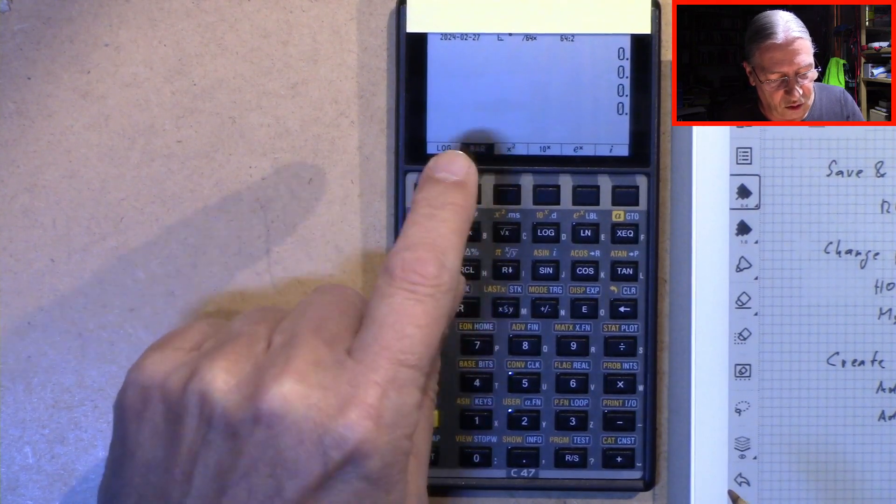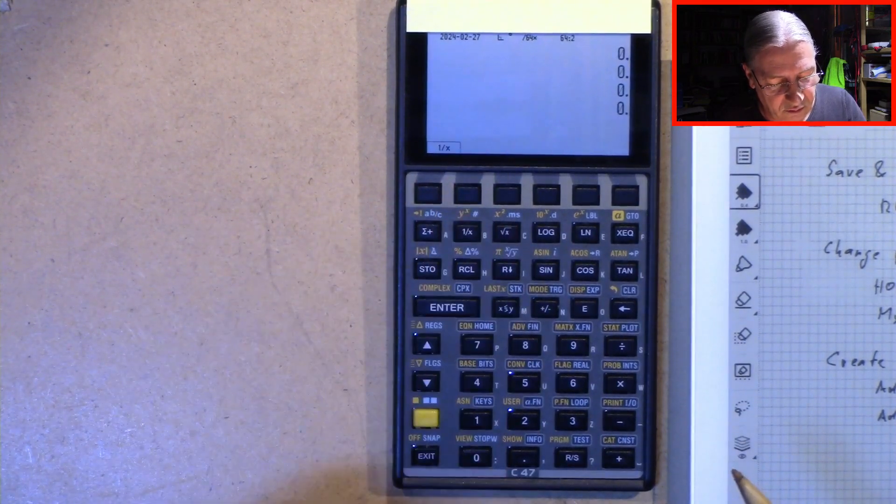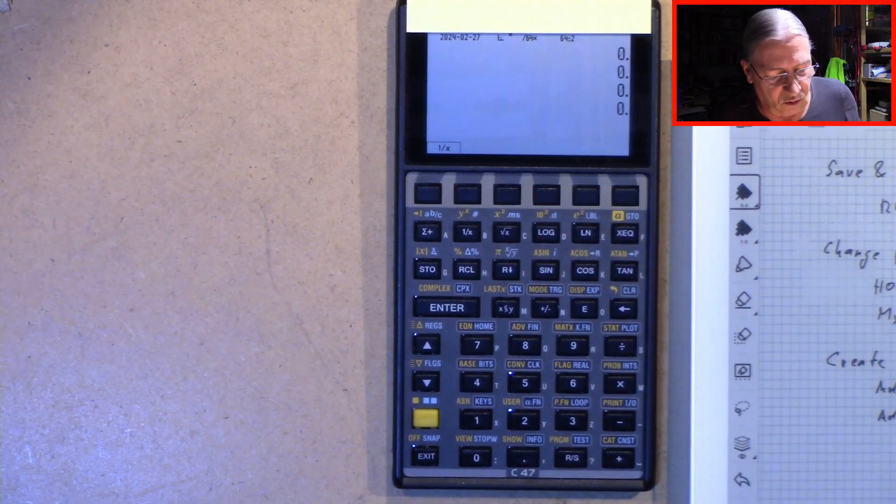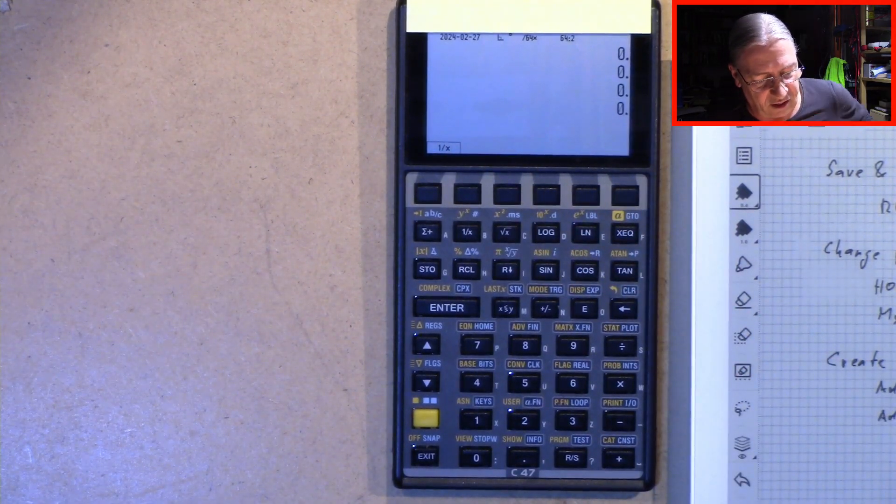And when we click now on bar, we get our bar menu which has just one item, the one divided by x. And that's it.